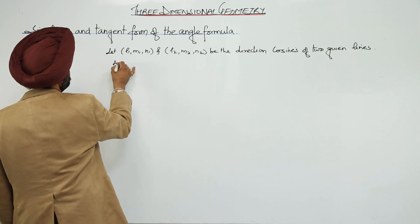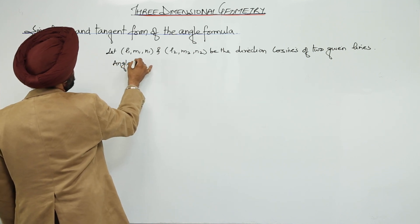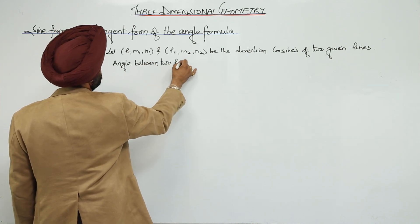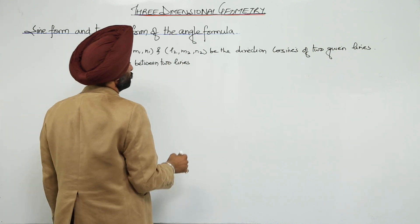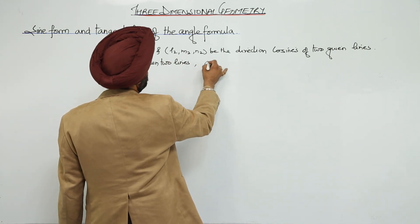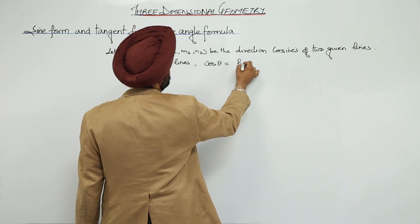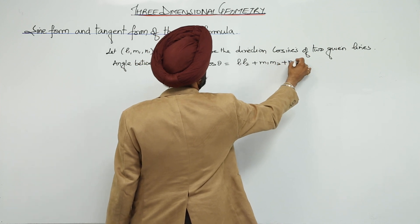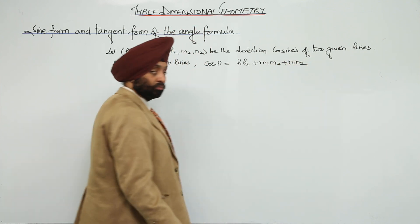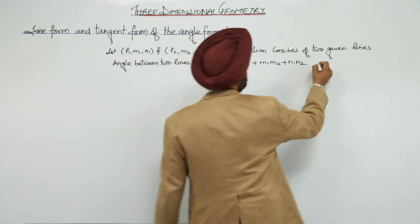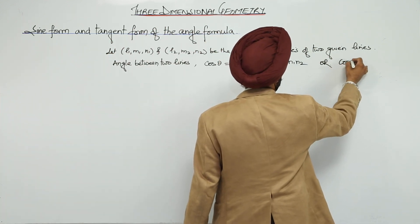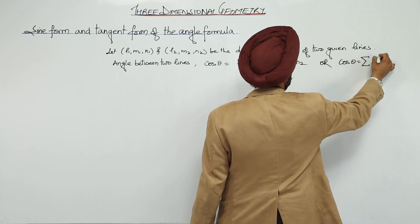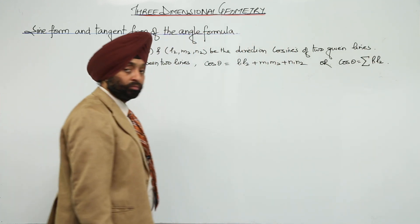The angle between two lines is given by cos θ = L1L2 + M1M2 + N1N2, or we can write it as cos θ = Σ L1L2.